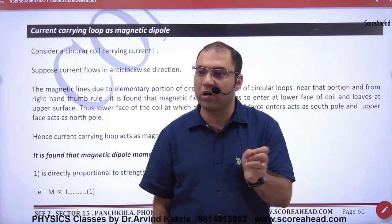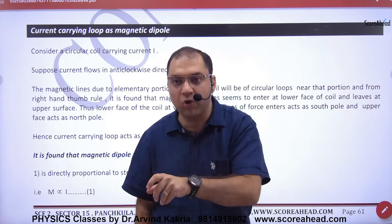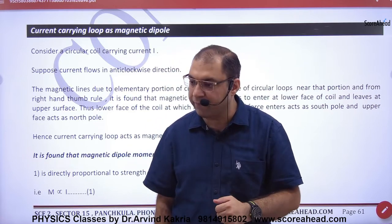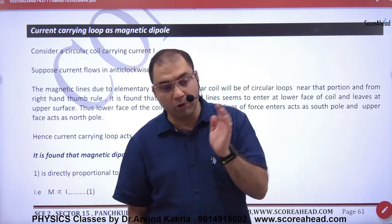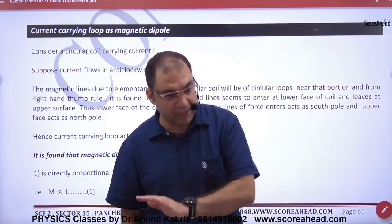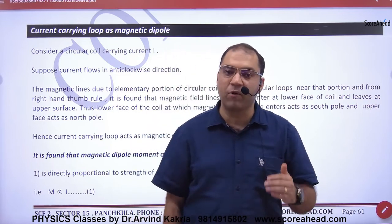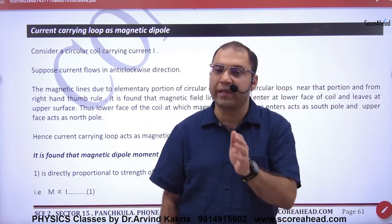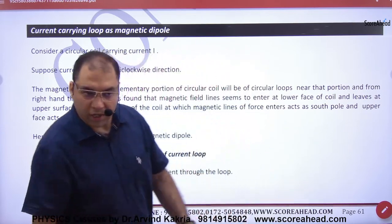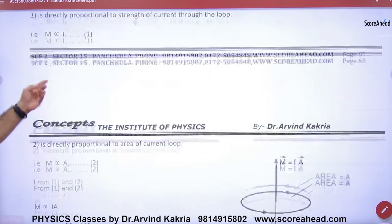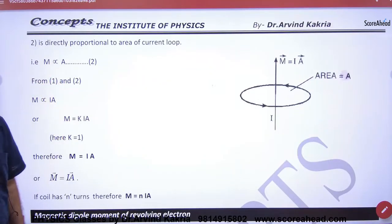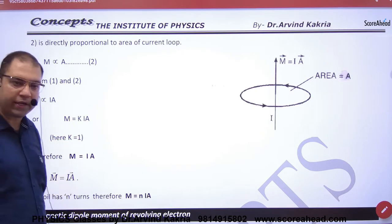For a bar magnet, the magnetic dipole moment formula is small m into 2L, where small m is the pole strength. For a current-carrying loop, there is no real pole strength, but capital M is proportional to current I and proportional to area A. Combining these with constant K equal to 1, the formula for capital M is I into A.